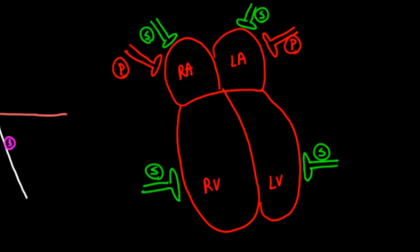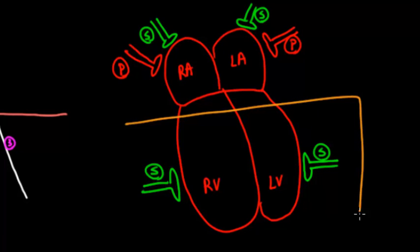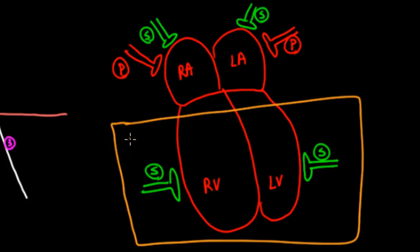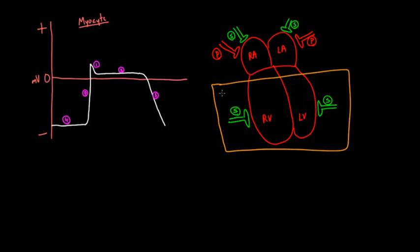I'm going to focus the rest of this video on the ventricles and ignore what happens in the atria. The main point is that sympathetic activity on the ventricles causes increased contractility — meaning increased force of contraction. The force of ventricular contraction is really important because it affects how blood gets to the rest of the body and to the lungs.